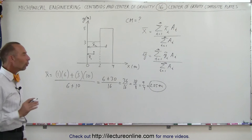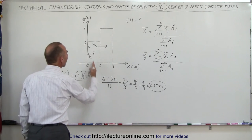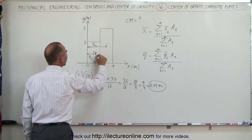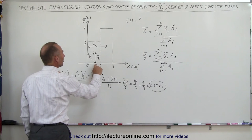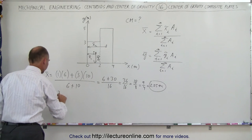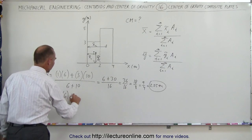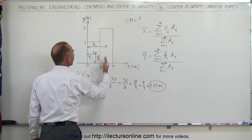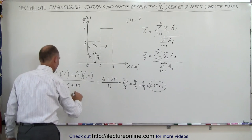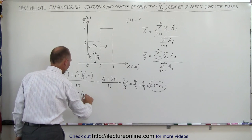We do the same for the y coordinate. The y coordinate of the first piece, y sub 1, is halfway between 0 and 3, which is 3 over 2. Times the area, which is 6. Plus the y coordinate of the second piece, which is halfway between 0 and 5, that's 2.5 or 5 over 2, times the area of 10.